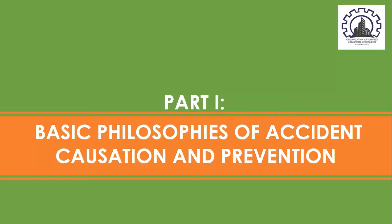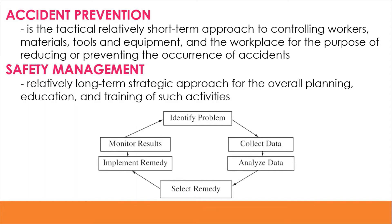Let us formally start Part 1: the basic philosophies of accident causation and prevention. Accident prevention is a tactical, relatively short-term approach to controlling workers, materials, tools, and equipment in the workplace for the purpose of reducing or preventing the occurrence of accidents. This approach focuses on the tangible parts of the workplace — the man, the tools and equipment, machines, and materials. Safety management is the long-term approach to increase safety within the whole company. Accident prevention is under safety management and includes overall planning, education, and training.